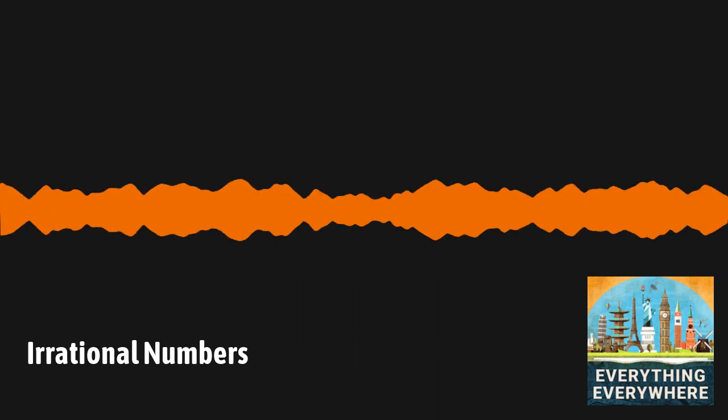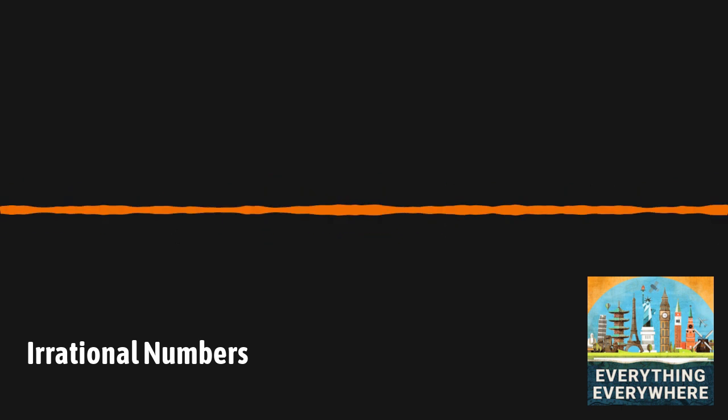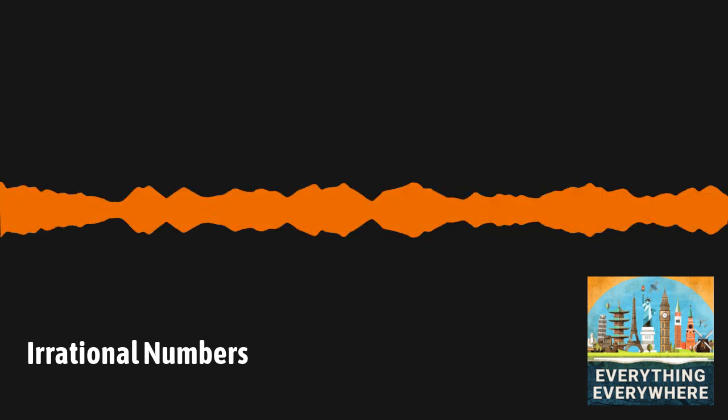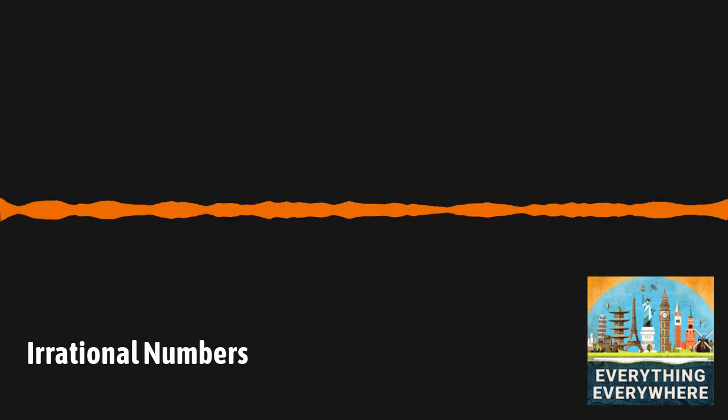According to legend, the discovery of the irrationality of the square root of two is attributed to a Pythagorean named Hippasus. It's said that he revealed this mathematical truth to the Pythagorean community, which resulted in a conflict that led to his expulsion from the group. And in some versions of the story,